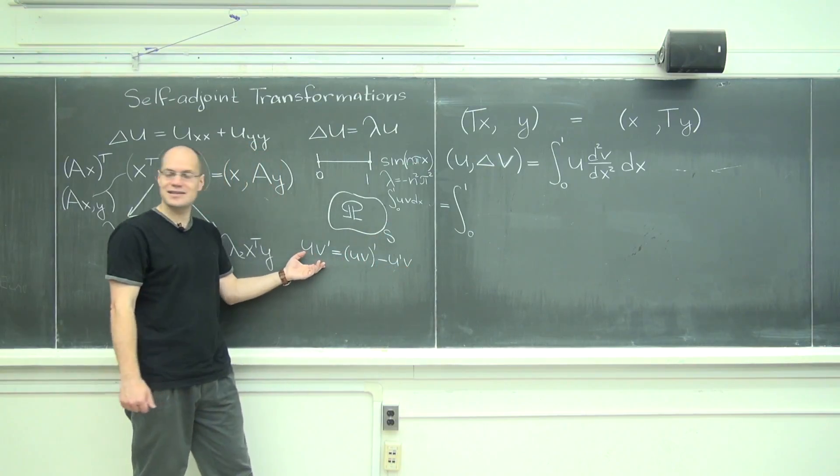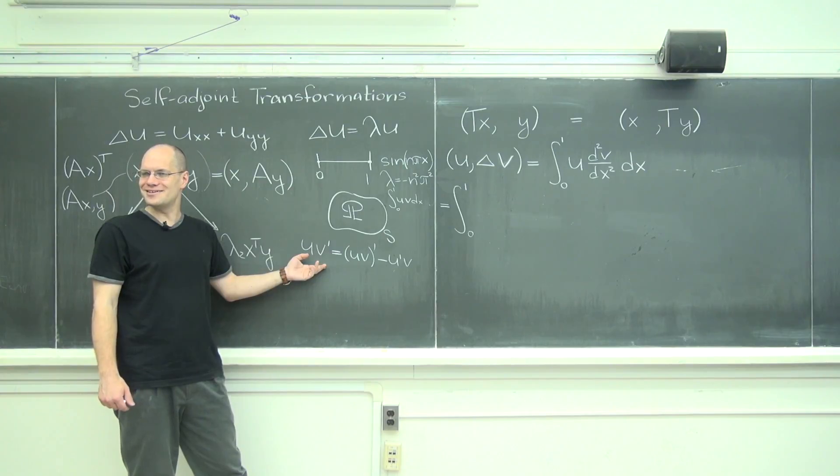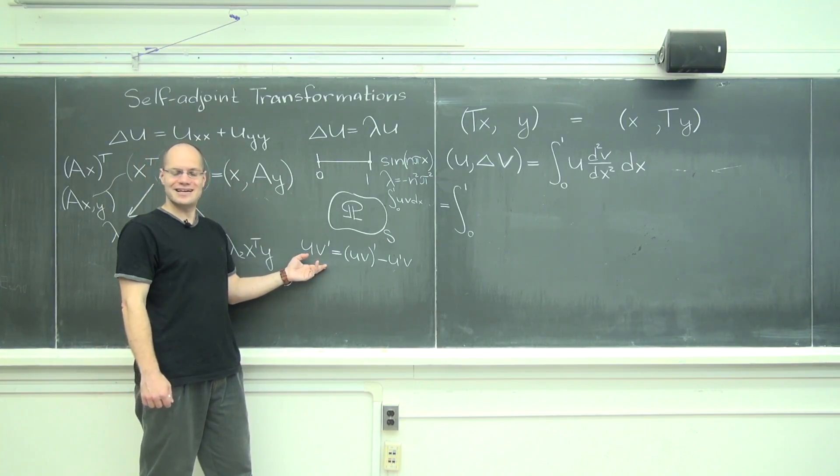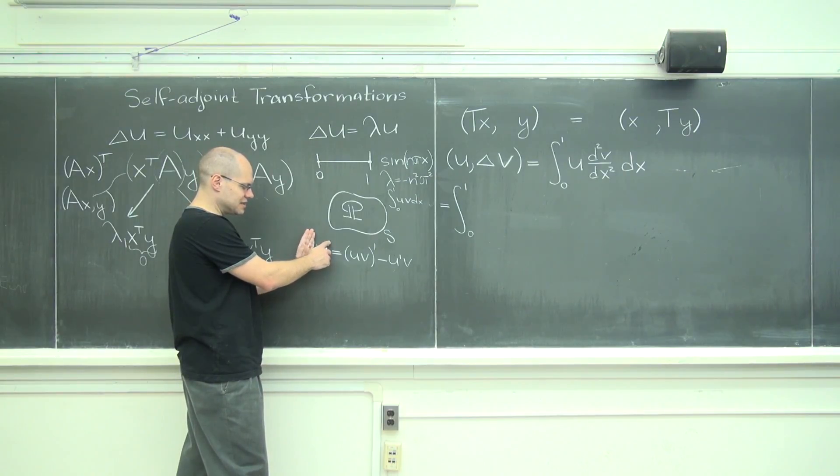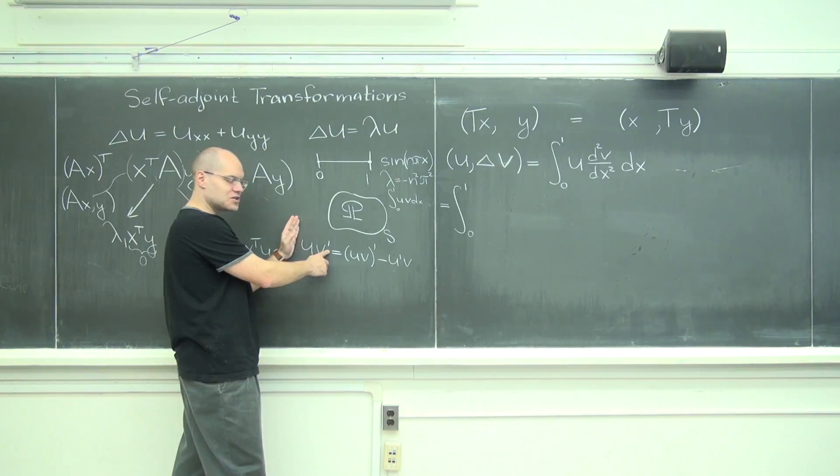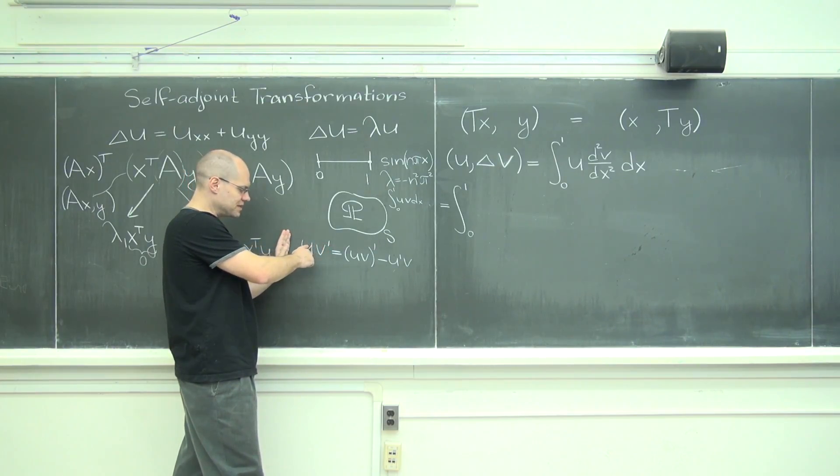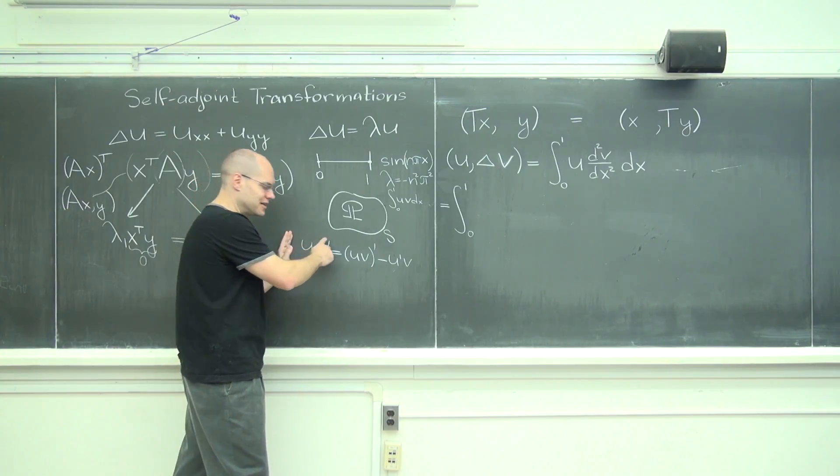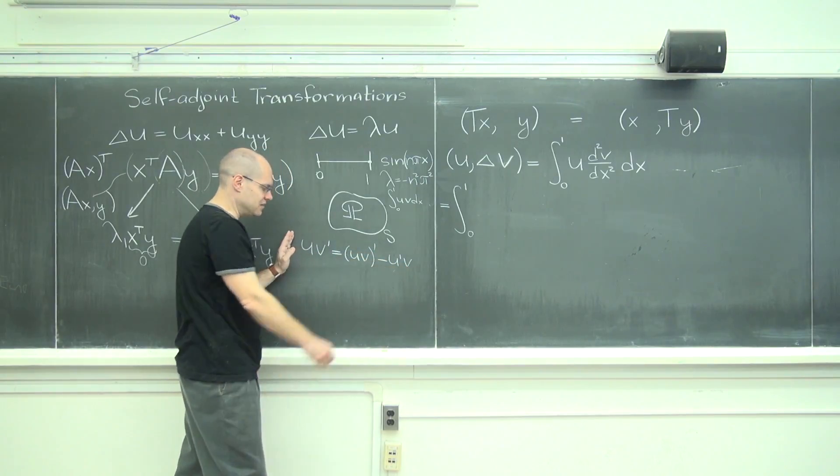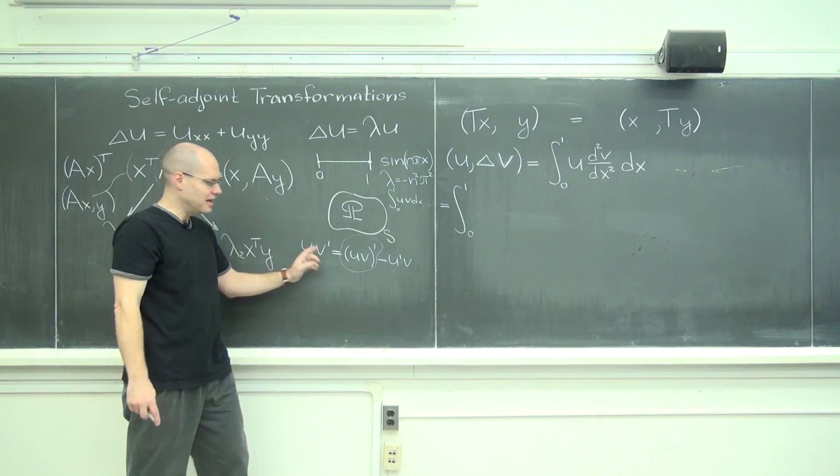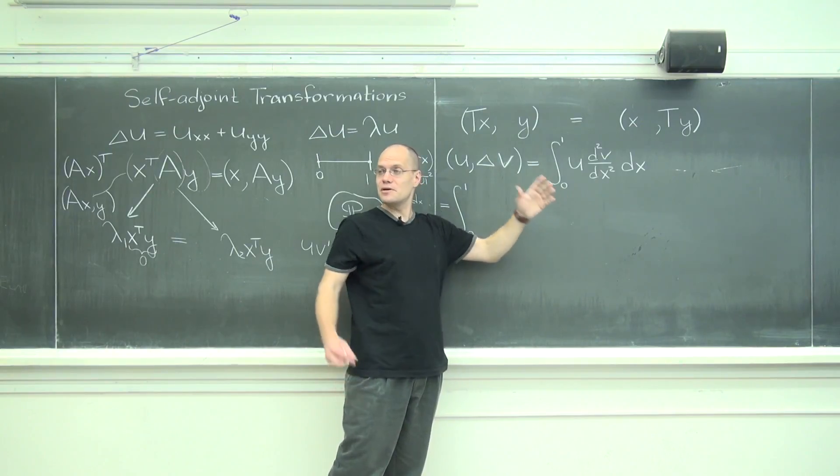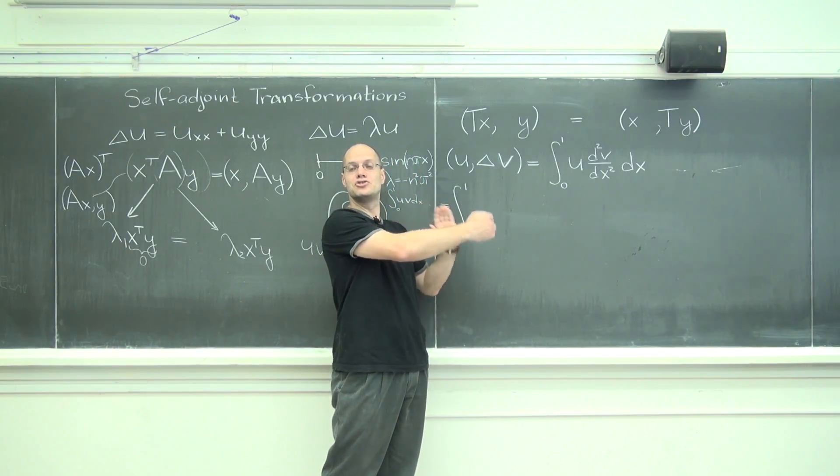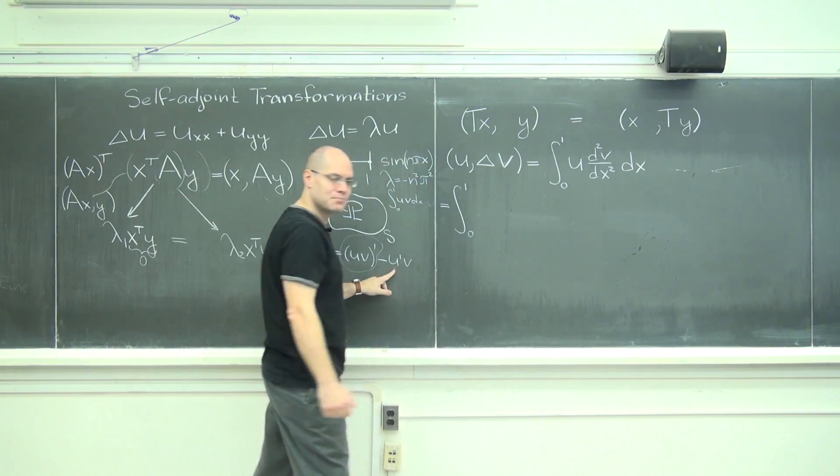Two ways to think about it. One way is if you look at this, it'll be u prime v plus u v prime. So you move u prime v to the other side, and that's what you have. The way I think about it is that I start here. This is my d/dx. I move this operator. I factor out the operator of d/dx which picks up an extra term of u prime v, so then I have to subtract it out to correct it.